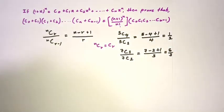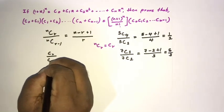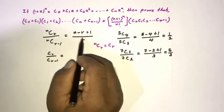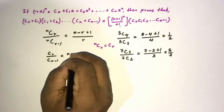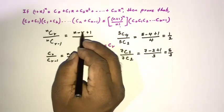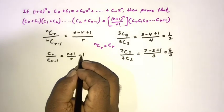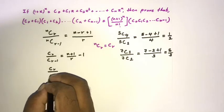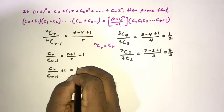We also know that nCr equals Cr. So Cr over C(r-1) equals (n - r + 1) / r. Rearranging, this equals (n + 1)/r minus 1. Taking the minus one to the left-hand side: Cr over C(r-1) plus one equals (n + 1) / r.